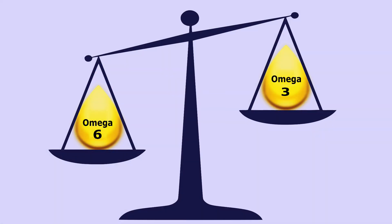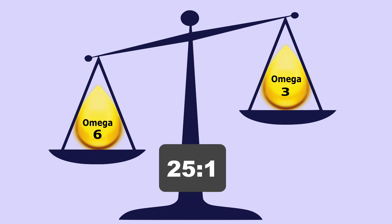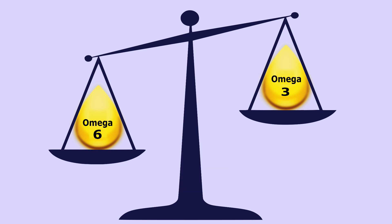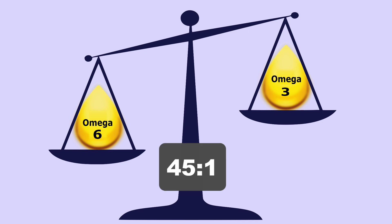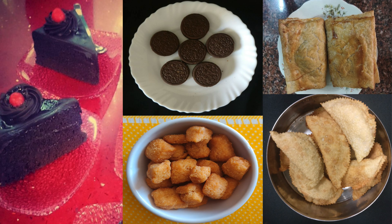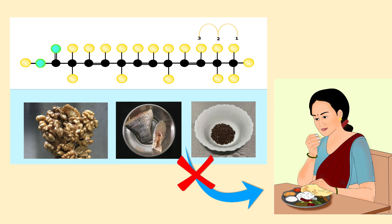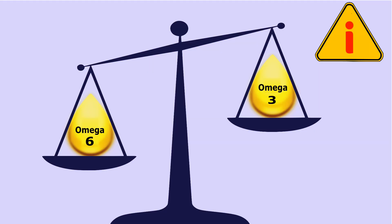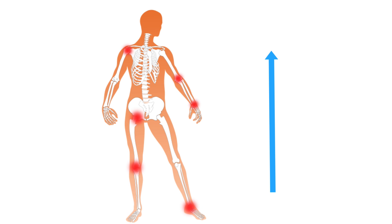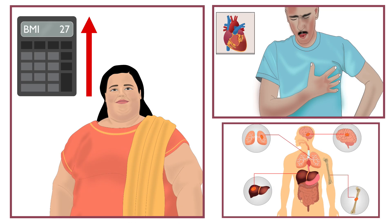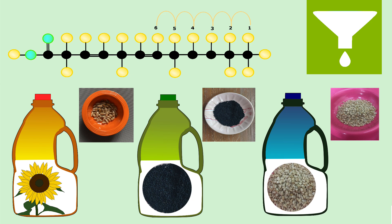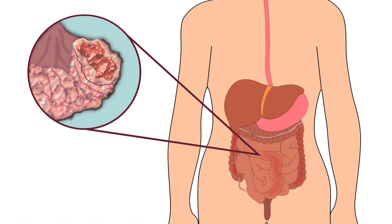The current consumption pattern shows a ratio up to 25 to 1 in western countries, whereas in India and other South Asian countries the ratio is as high as 45 to 1. This is because of the increased consumption of processed and fried foods, and inadequate consumption of omega-3 rich foods. An imbalance of omega-6 and omega-3 increases inflammation in the body, raising the risk of obesity, heart diseases and cancer. Refined seed oils are rich in omega-6, which damage gut health.